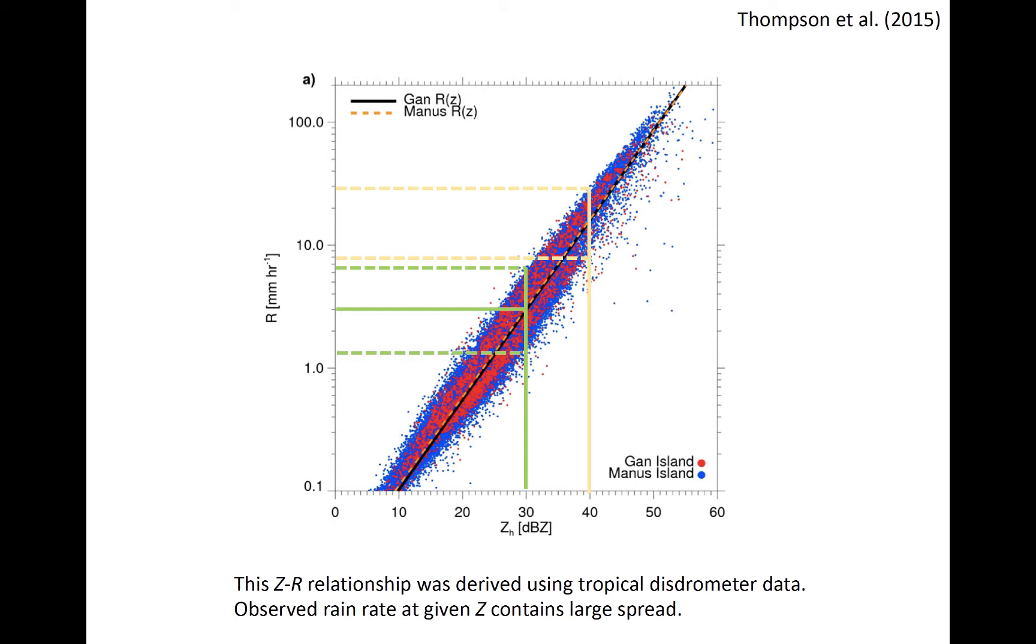So clearly, Z-R relationships, or any empirically derived dual-pole relationships for that matter, are limited in their ability to absolutely estimate rainfall rate at a single point in time and space.